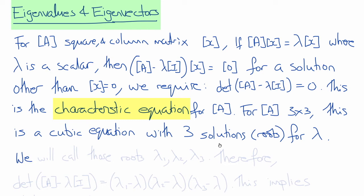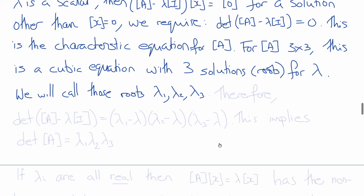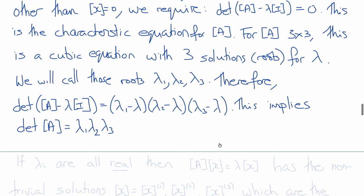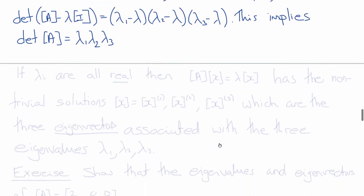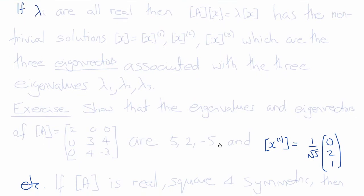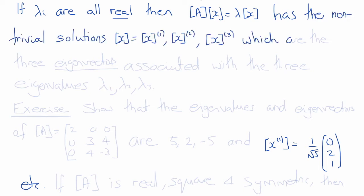Knowing that lambda 1, lambda 2, lambda 3 are the eigenvalues of the characteristic equation, we can write that the characteristic equation looks like (lambda 1 minus lambda)(lambda 2 minus lambda)(lambda 3 minus lambda). Looking at the constant term, we can deduce that the determinant of A must equal the product lambda 1 times lambda 2 times lambda 3. If all eigenvalues are real, then the equation AX equals lambda X has non-trivial solutions x1, x2, and x3 — those are the eigenvectors associated with the three eigenvalues.